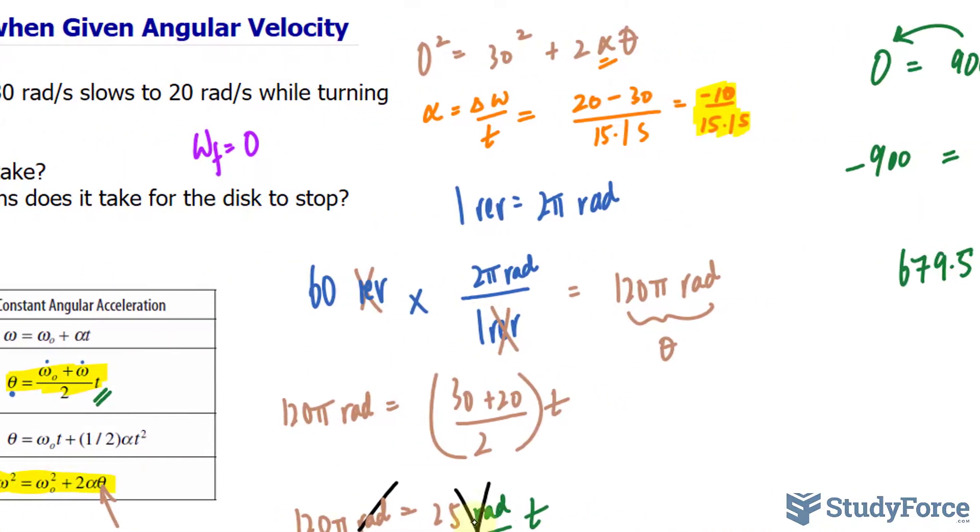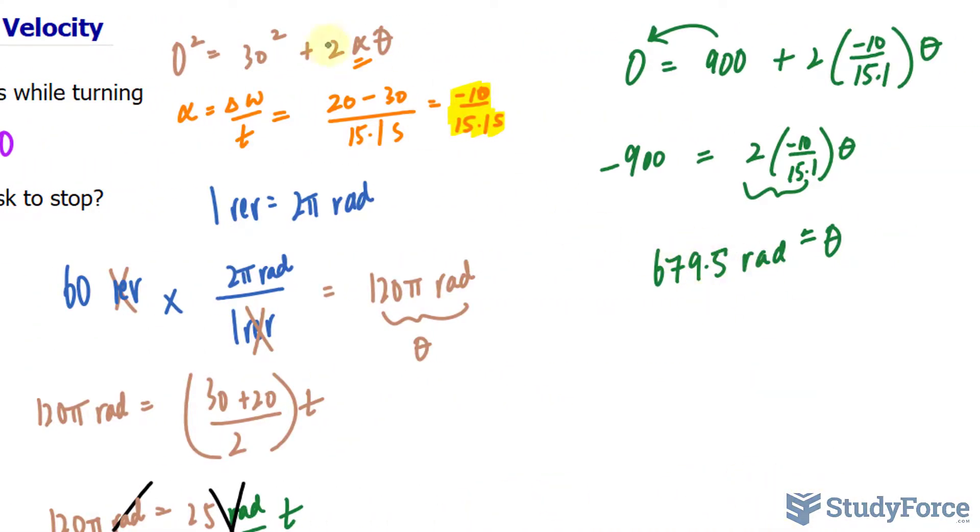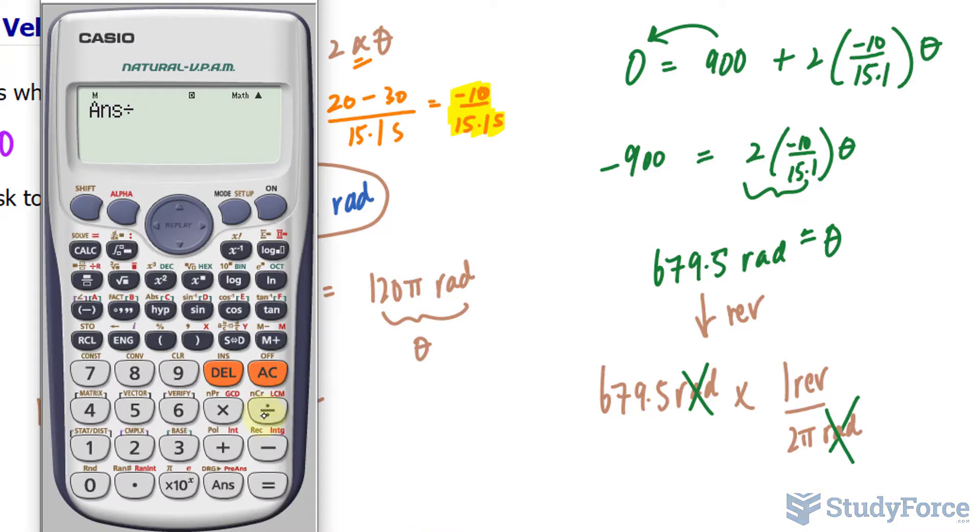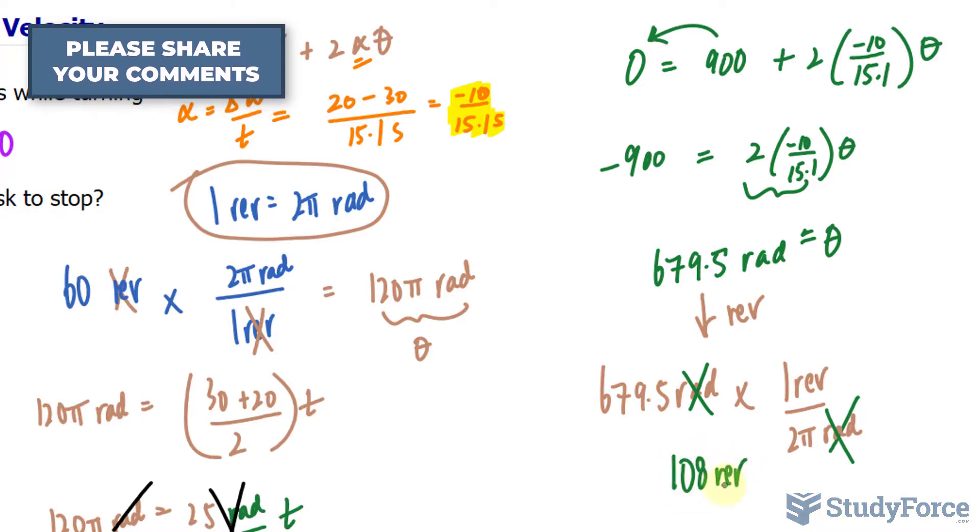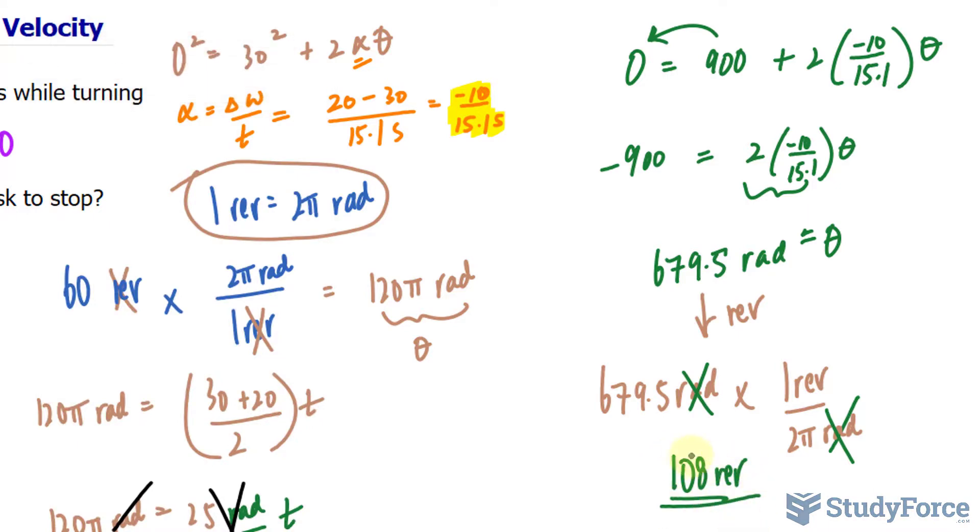The question is asking how many revolutions. So we need to now change this into revs. And we can change it into revs by using this conversion ratio that I spoke of earlier. 679.5 radians times 1 rev at the top and 2 pi radians at the bottom. The radians unit cancels. This value divided by 2 pi makes 108 revs. It needs to revolve 108 times approximately that before it stops down completely. And there you have it.